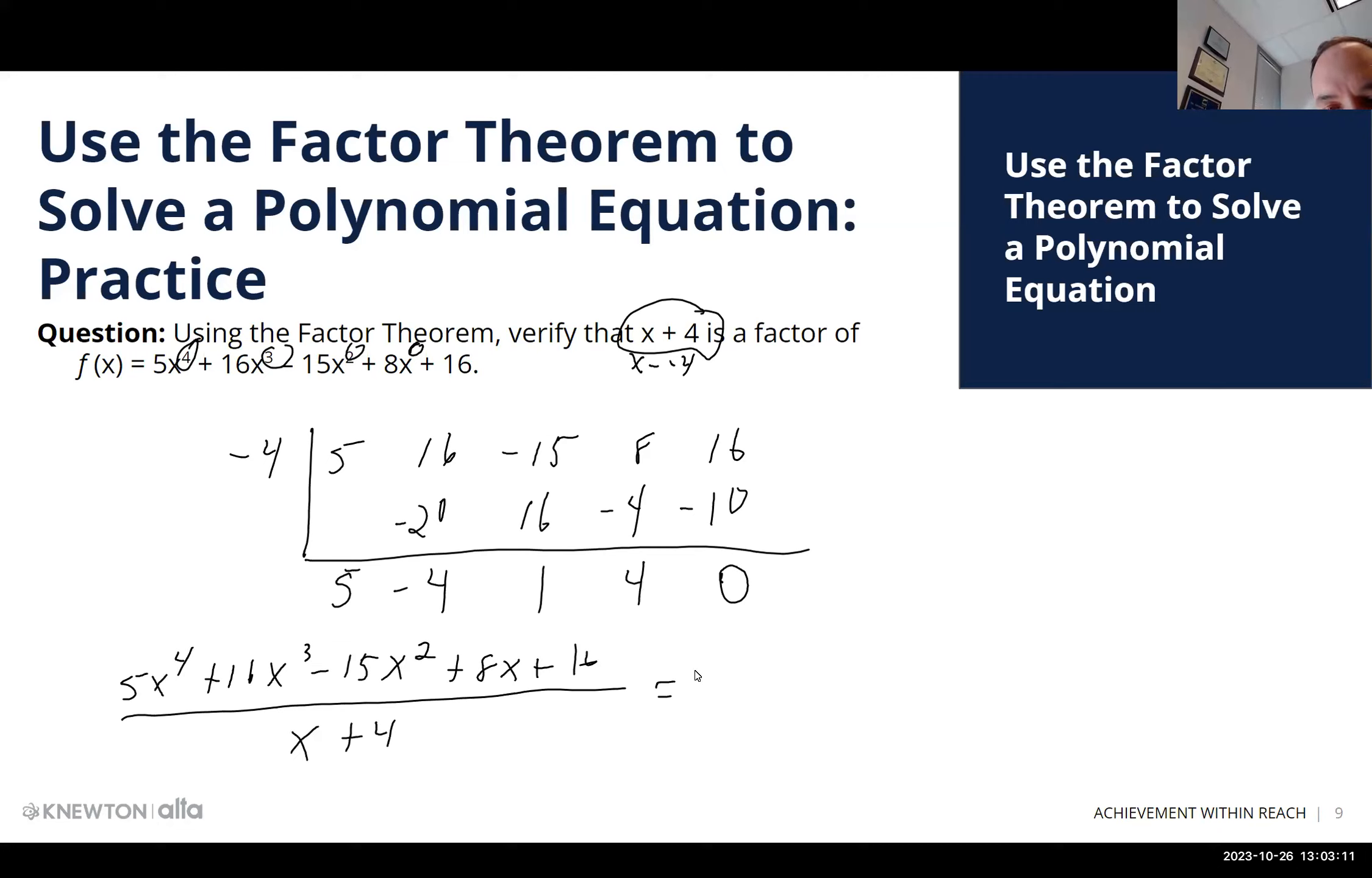we would get 5x to the 3rd power minus 4x to the 2nd power plus 1x plus 4. So what we like to do is actually move this divisor up here. Basically multiply both sides by it. And then you can see that... Let's see.